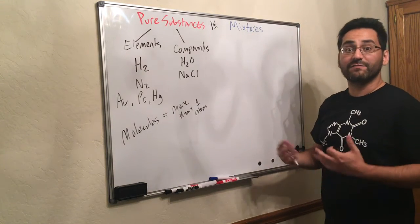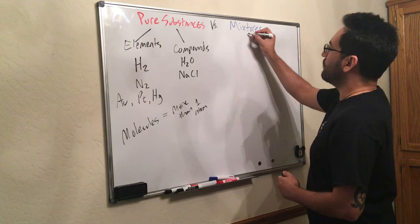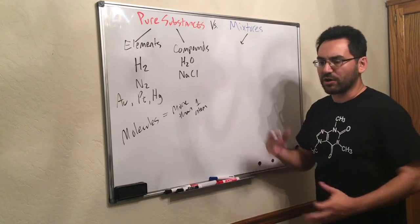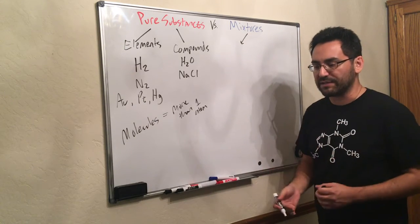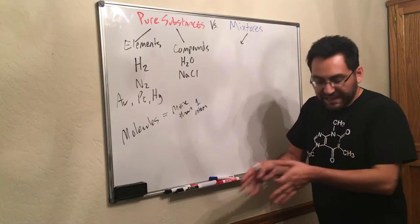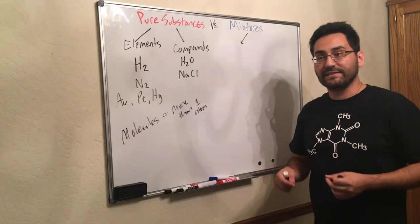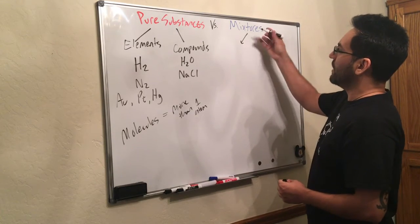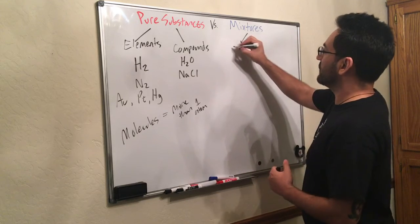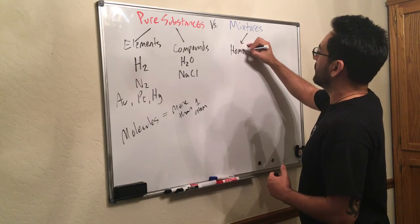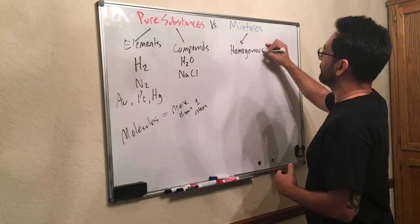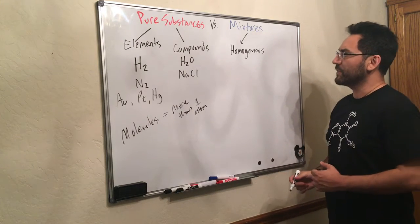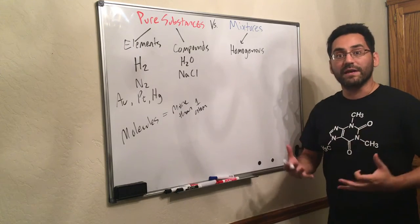So let's talk about the two different kinds of mixtures we can have. We can have mixtures that are completely mixed, thoroughly mixed, where any place we look, we see the exact same thing. So a mixture that's that way is called homogeneous. And you'll hear this term in your chemistry course. Homogeneous means it's evenly mixed.